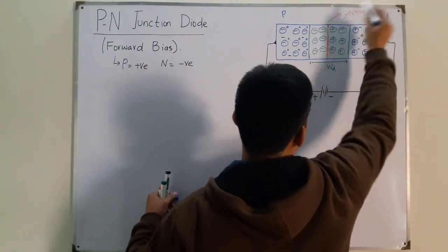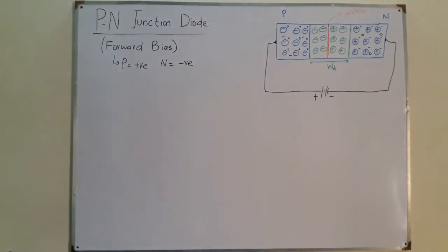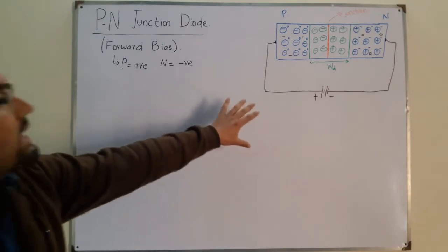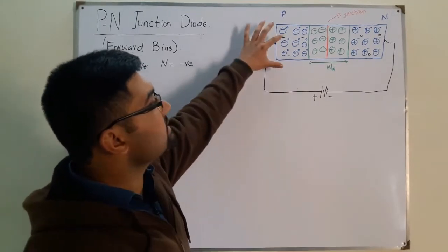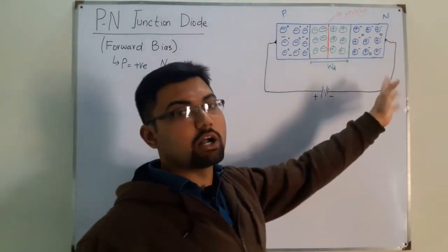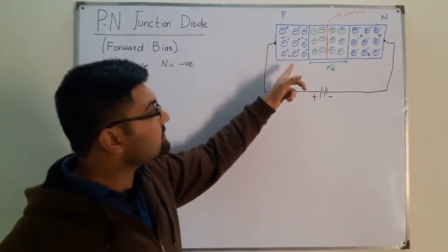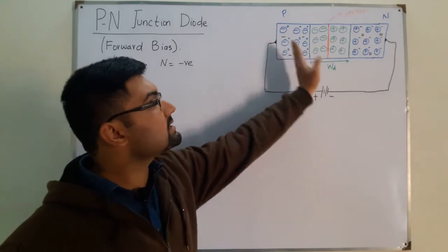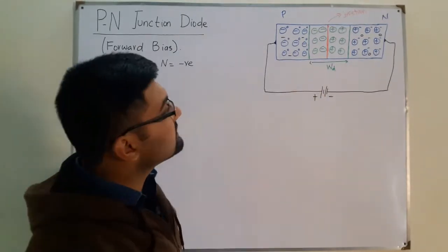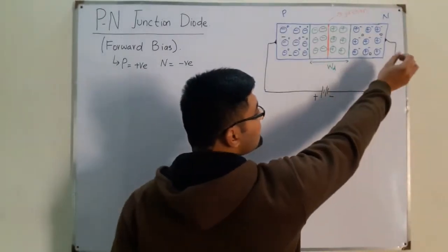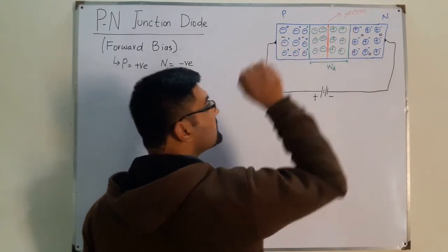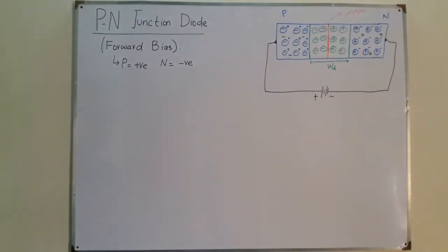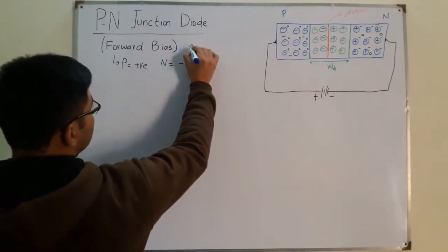So here I have made the P-N junction diode — this is P, this is N, this is the junction, and this is the width of the depletion region. Now the P side is connected to the positive terminal. The positive terminal is equivalent to holes, and the negative terminal sprays negative charges, so more positive holes are injected, and the holes are repelled, meaning recombination takes place.